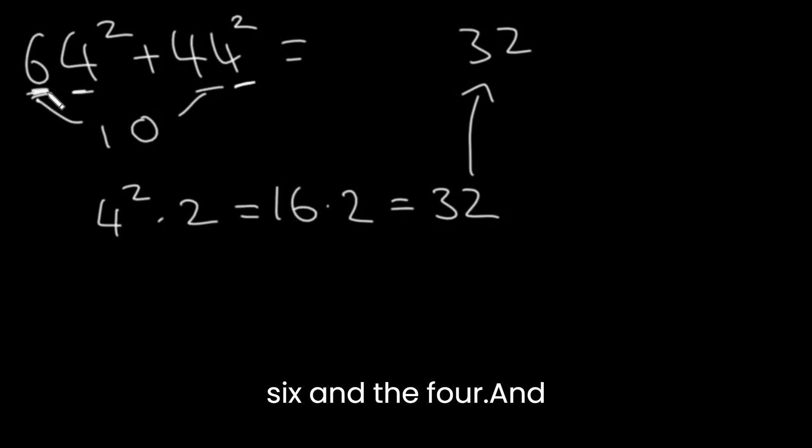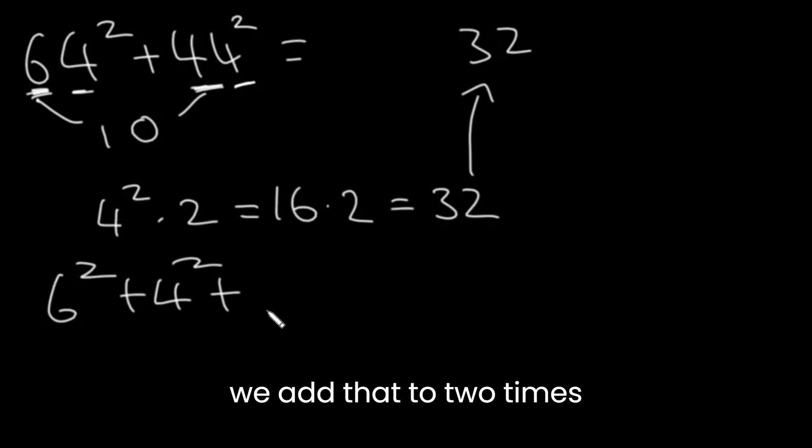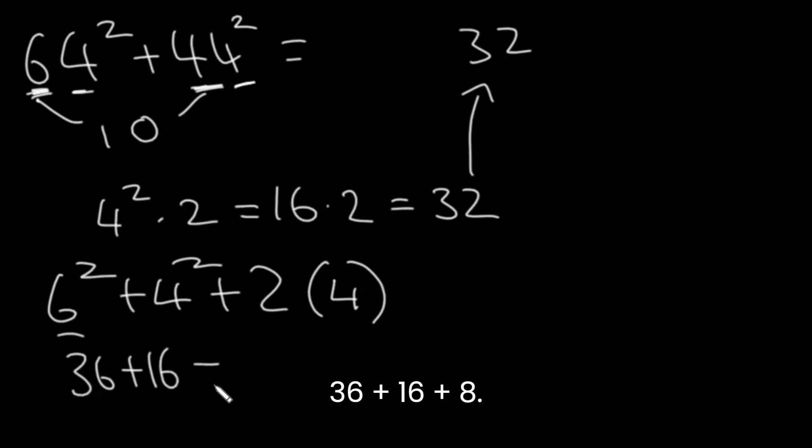Then we take the 6 and the 4, and we square each of them, and then we add those together. Then we add that to 2 times whatever the unit's digit is, so that's 4. So 6 squared is 36 plus 16 plus 8.